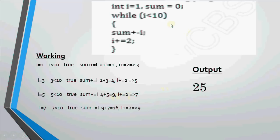4 plus 5 becomes 9. And i becomes 7. 7 less than 10 is also true. So previous sum was 9. 9 plus 7 becomes 16. And i becomes 9. 9 less than 10 is true. So previous sum was 16. 16 plus 9 is 25. And i becomes 11. When i becomes 11, the condition becomes false. 11 less than 10 is false. We don't repeat further. So final output is 25.